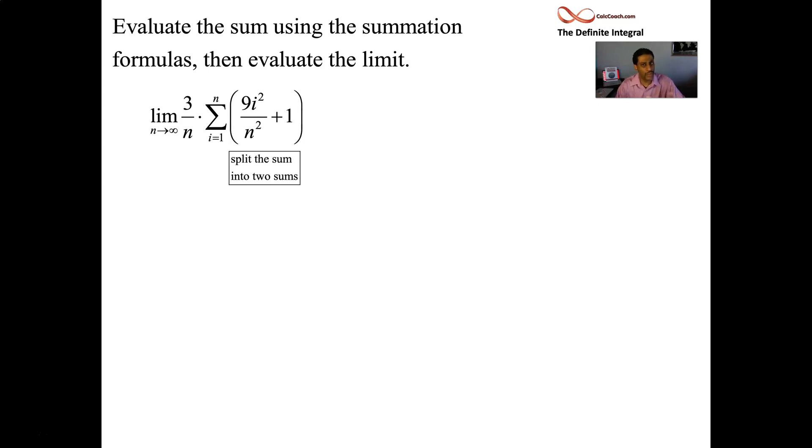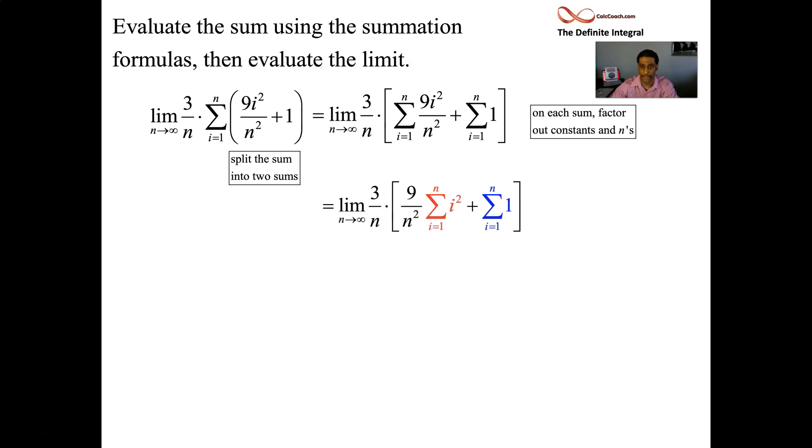We have nine times i squared over n squared plus one. All of that is inside of the summation. And the summation goes from i equals one to n outside of the summation is three over n. That has nothing to do with i. So that can come outside and we're taking the limit as n goes to infinity. First up, split this up into two separate sums. Keep the three over n to the outside. So the sum of the nine i squared over n squared plus the sum of the one. All right. Great. Now we'll factor out here. This nine that's over n squared, it has nothing to do with i. So we can pull it out of the summation.